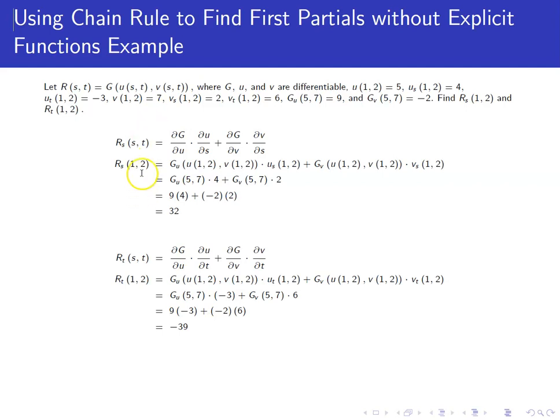All right, we want to differentiate with respect to S. Well, again, R really is this function G. G is defined in terms of U and V, but then each of U and V are defined in terms of S and T. So if I want the partial with respect to S, I've got to differentiate G with respect to U first and then differentiate U with respect to S. And then do the same thing with V. Partial of G with respect to V times the partial of V with respect to S.